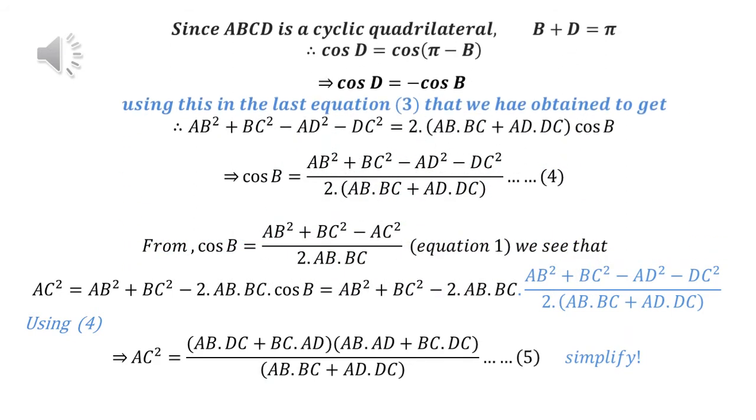To proceed further, note that ABCD is a cyclic quadrilateral, which in turn implies that opposite angles are supplementary. Therefore, B plus D equals pi, which implies cos D equals minus cos B. We use this result in equation 3 to get the expression of cos B in terms of the sides of the cyclic quadrilateral.